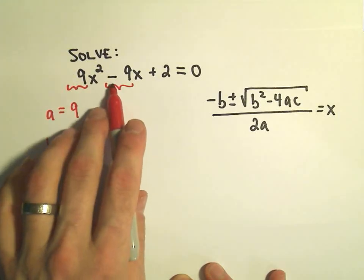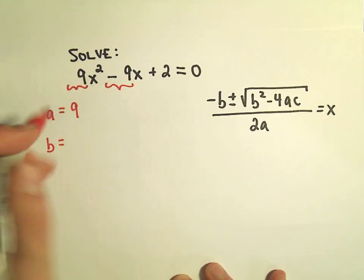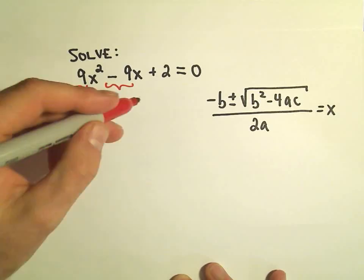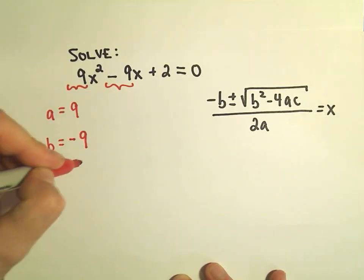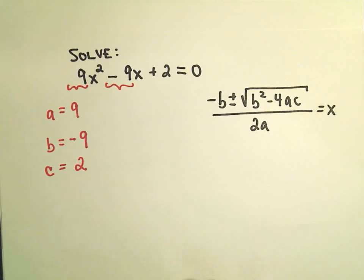Sometimes people will forget to use the sign, so be careful. It says b is actually going to be negative 9, and then c is the constant, which in this case is simply going to be positive 2.